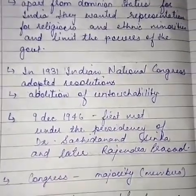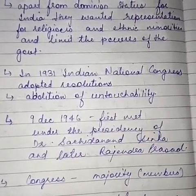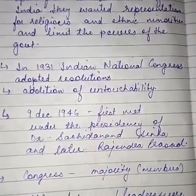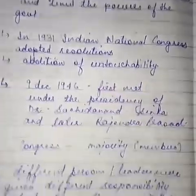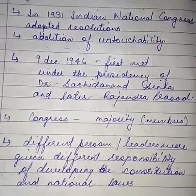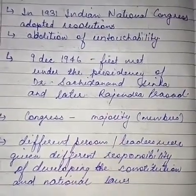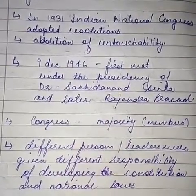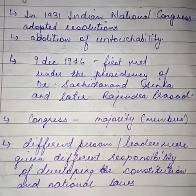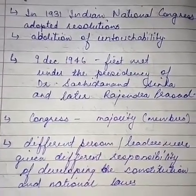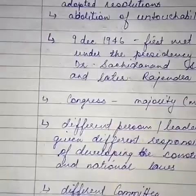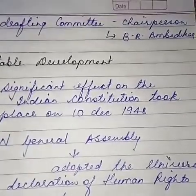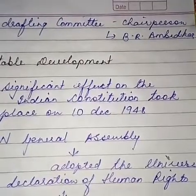Finally, in 1931, the INC — the Indian National Congress — adopted a resolution calling for the complete abolition of untouchability, whether on the basis of caste, religion, or anything else. Then on 9 December 1946, the first meeting of the Constituent Assembly was held under the presidency of Dr. Sachidananda Sinha, and in the second meeting, Dr. Rajendra Prasad was made president. After elections, Congress got a majority, and different leaders were given separate responsibilities for developing the constitution. The most important committee was the Drafting Committee, under the chairmanship of Dr. B.R. Ambedkar.